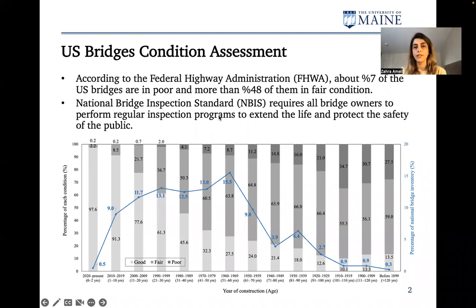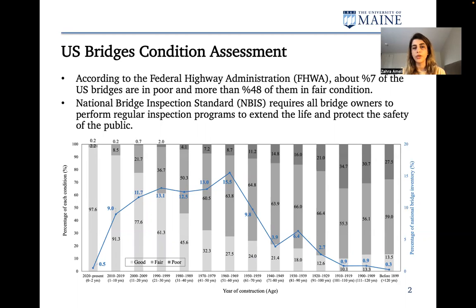According to the Federal Highway Administration database, about 7% of US bridges are in poor condition and more than 48% of them are in fair condition. The national bridge inspection standard requires all bridge owners to perform regular inspections to extend their life and protect the safety of the public. One of the most frequent types of bridge inspection is routine bridge inspection, which is usually done every 24 months.